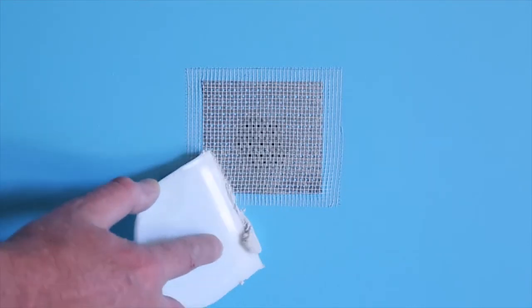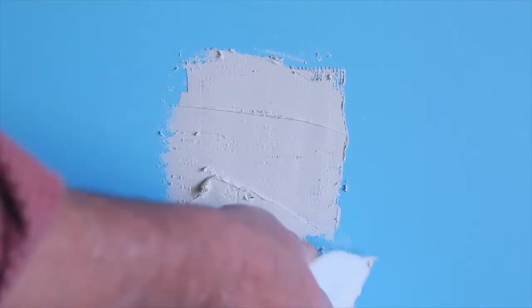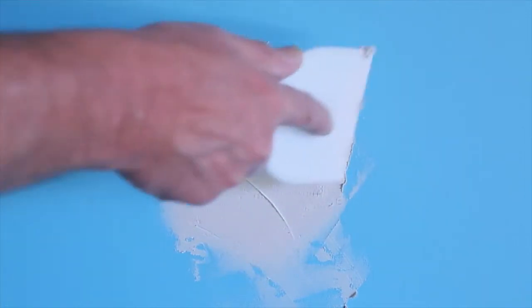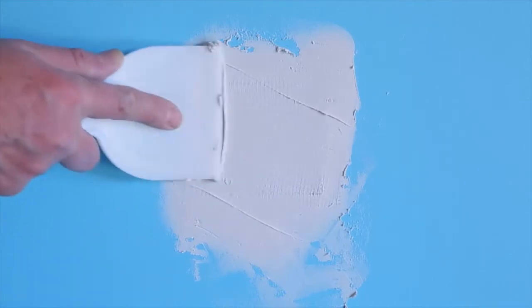Using the broad knife, begin to apply the patching compound over the fiberglass mesh, beginning with the edges. Work your way around until completely covered. You should also push some of the patching compound through the holes in the fiberglass mesh for a better finish.